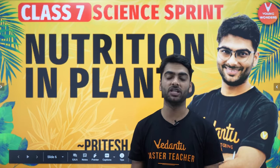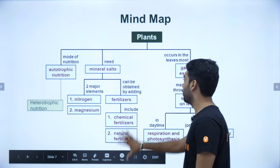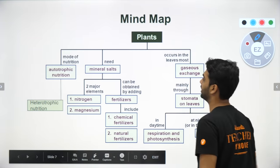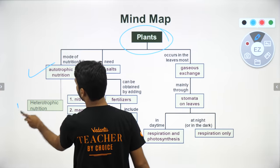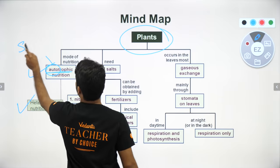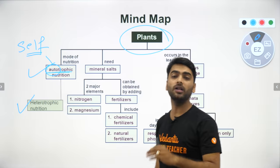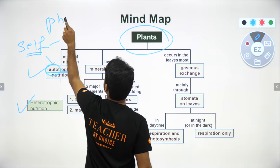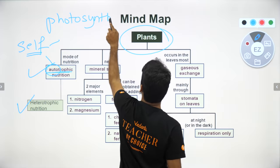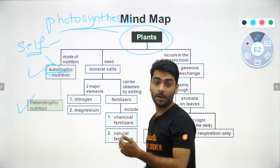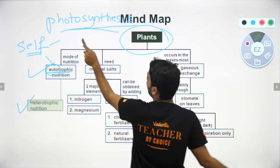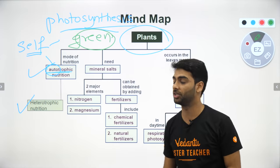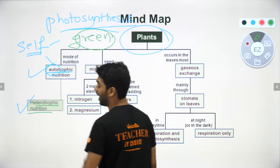Let us begin with the very important mind map, covering the entire chapter. Plants have got two major modes of nutrition. The first is autotrophic — 'auto' means self, that is, the self nutrition that plants do. All green plants carry out a biochemical process known as photosynthesis. All green plants carry out photosynthesis, and that is known as the autotrophic mode of nutrition.